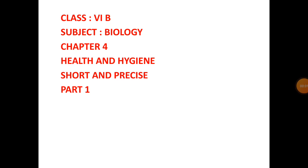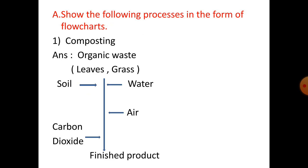Today we will discuss the question answers from chapter 4 Health and Hygiene. The first question is from the short and precise section: show the following processes in the form of flow charts.